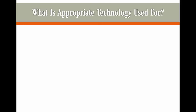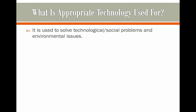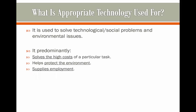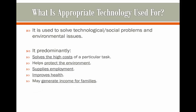So what is Appropriate Technology used for? It's used to solve technological and social problems as well as environmental issues. It mainly wants to solve the high costs of a particular task, helps to protect the environment, supplies employment for those to work with, and can also improve health as well as generating income for families.